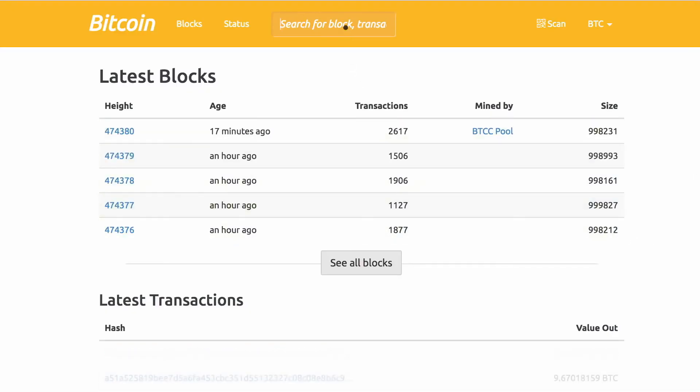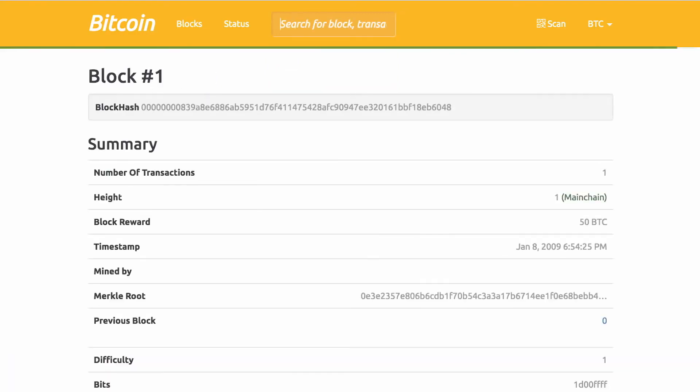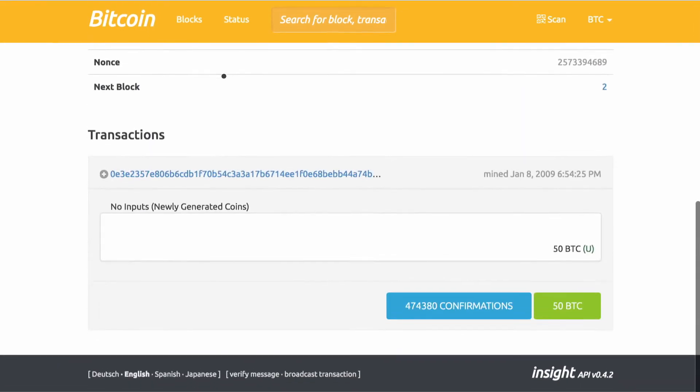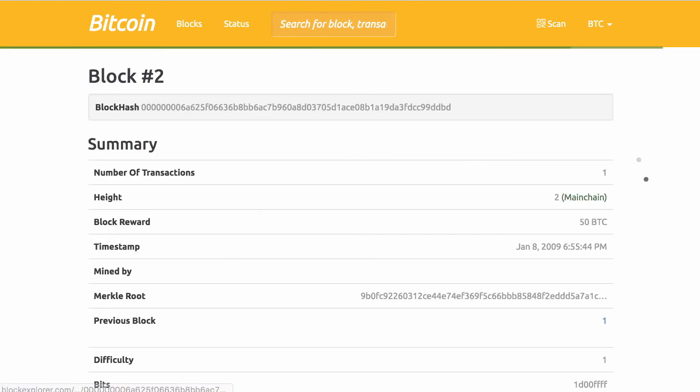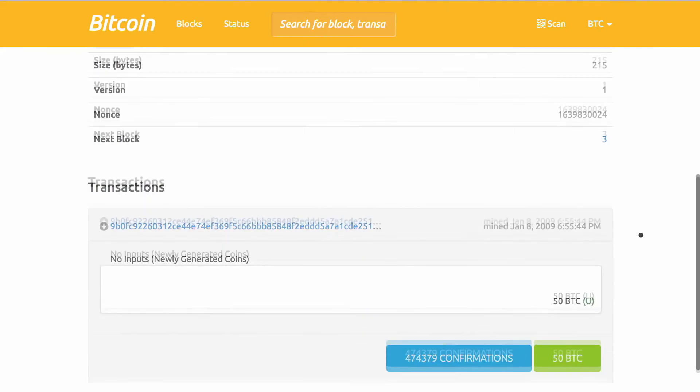There's actually a great website you can go to called Block Explorer that makes it easy to look through the Bitcoin blockchain. And if you look at the very first few blocks on the chain, they contain no transactions other than that 50 bitcoin reward to the miner.